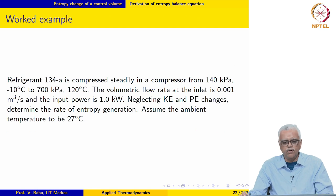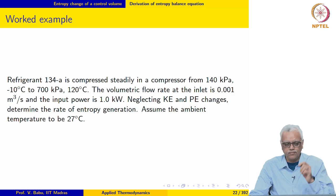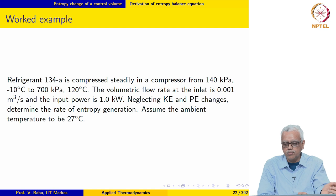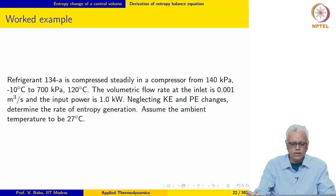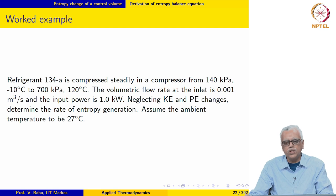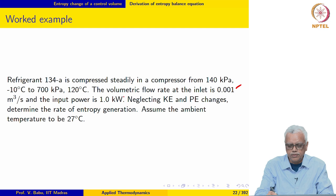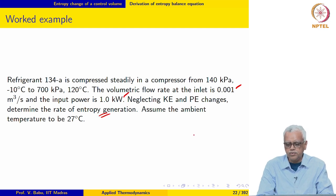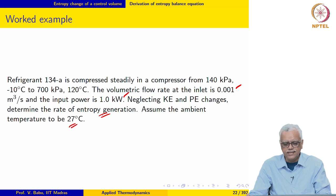Refrigerant R-134A is compressed steadily in a compressor from 140 kPa, −10°C to 700 kPa, 120°C. The volumetric flow rate at the inlet and input power are given. We are asked to calculate the rate of entropy generation. The ambient is assumed to be at 27°C.